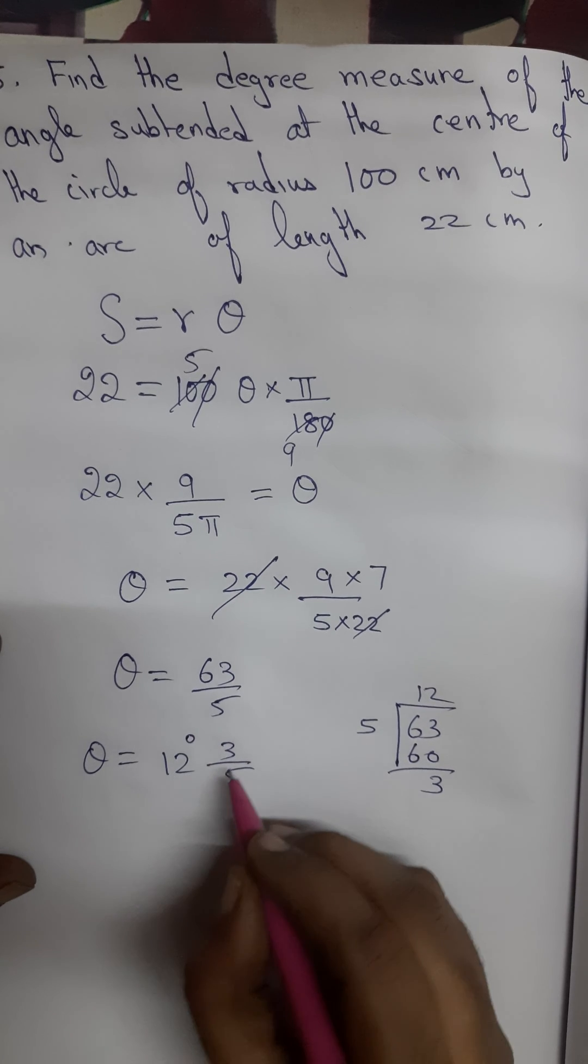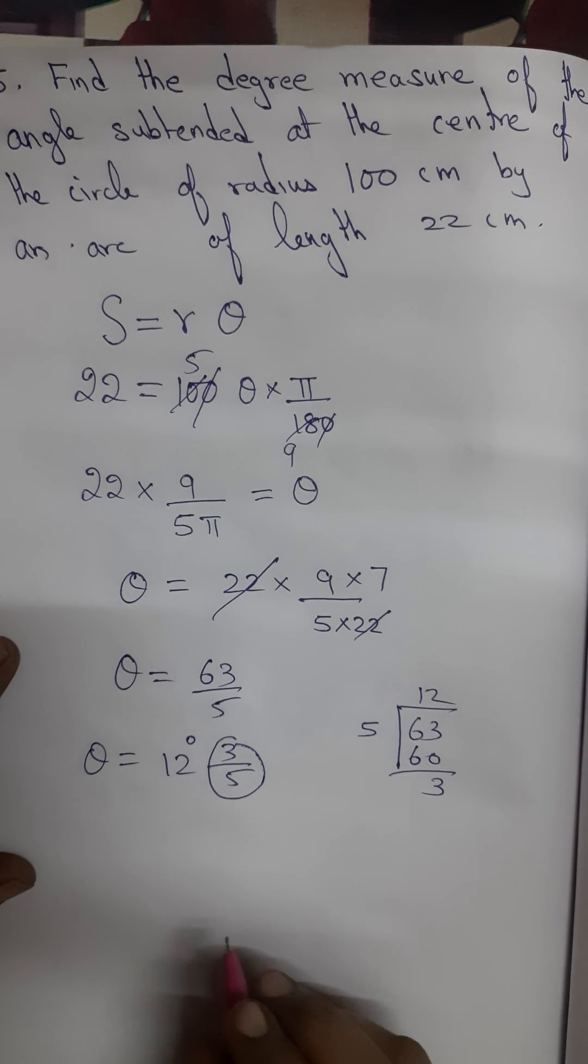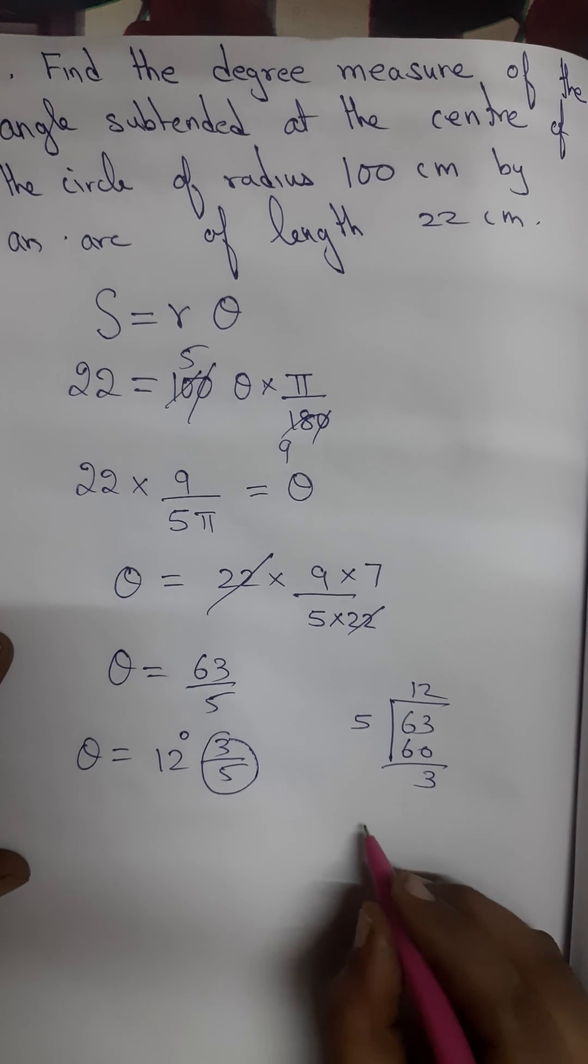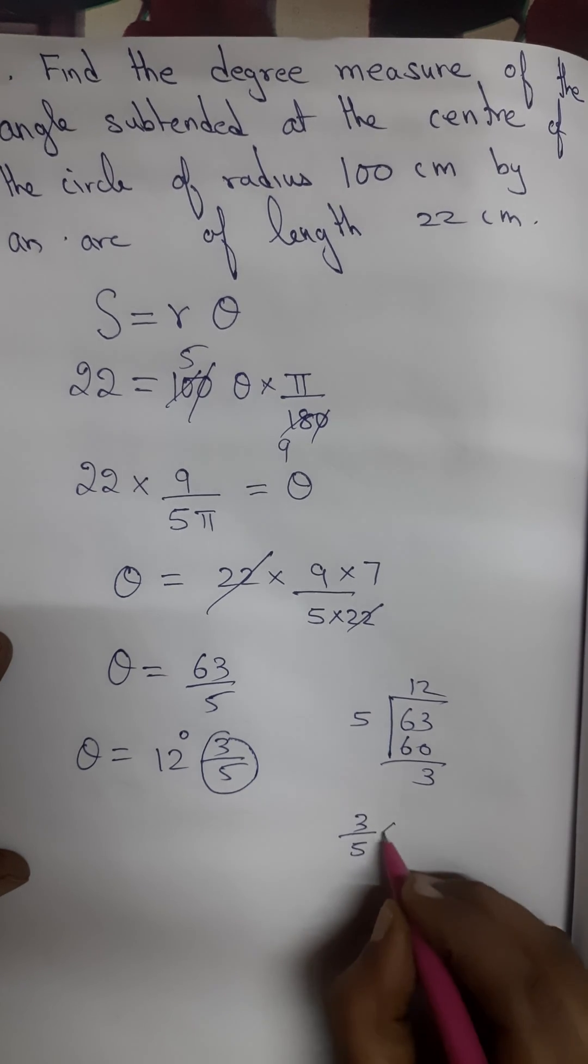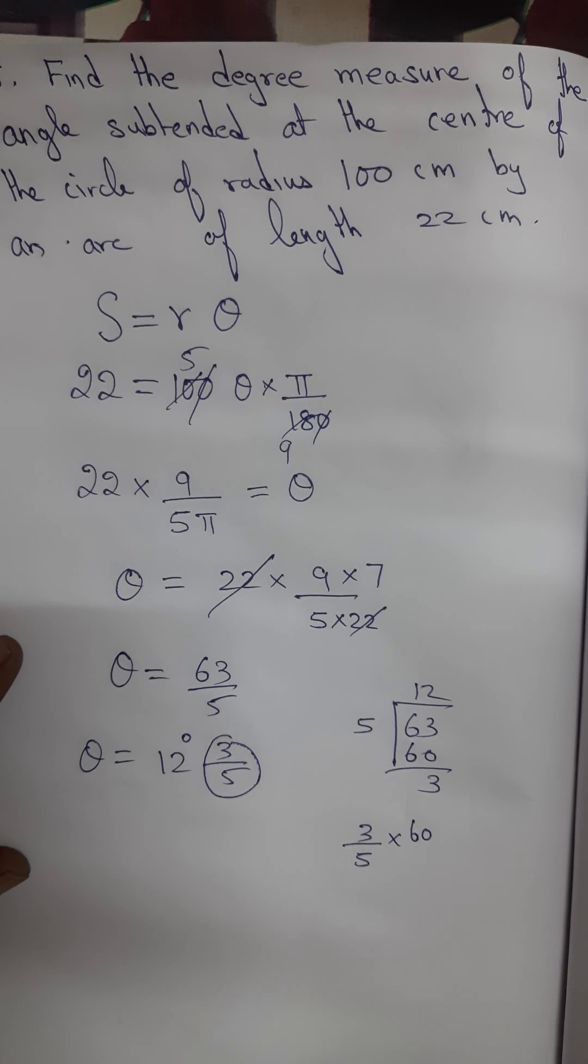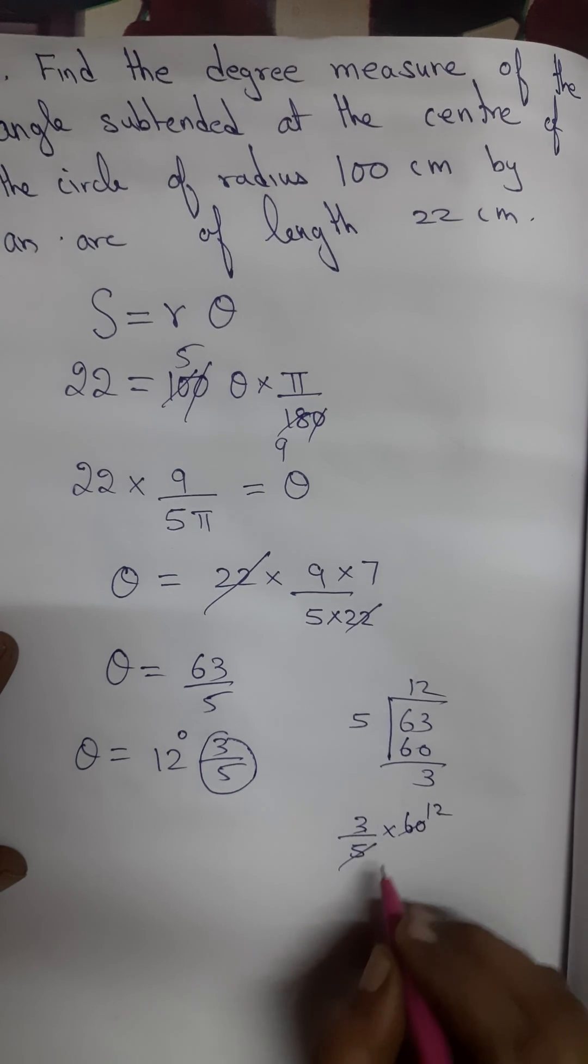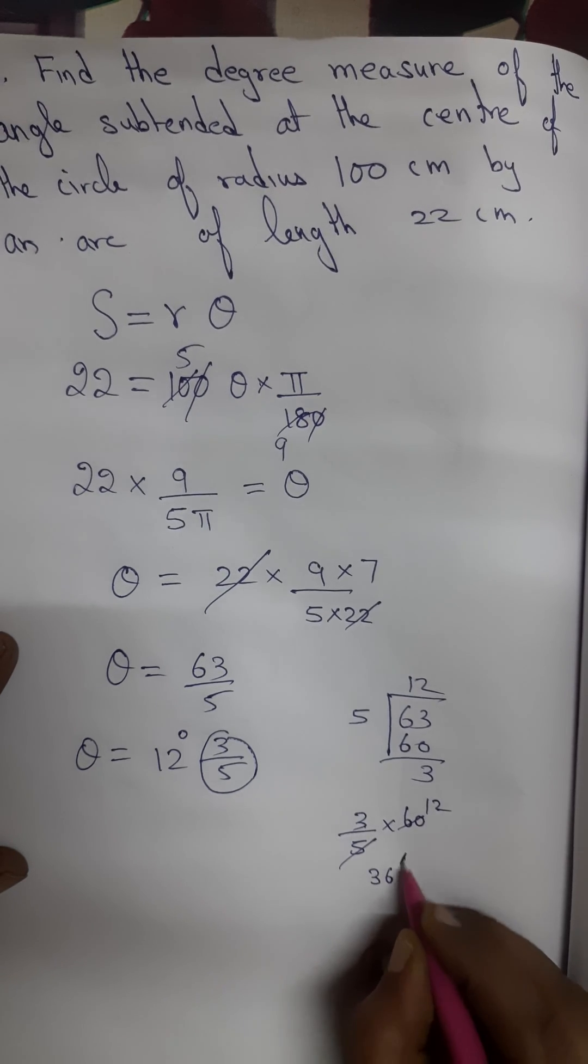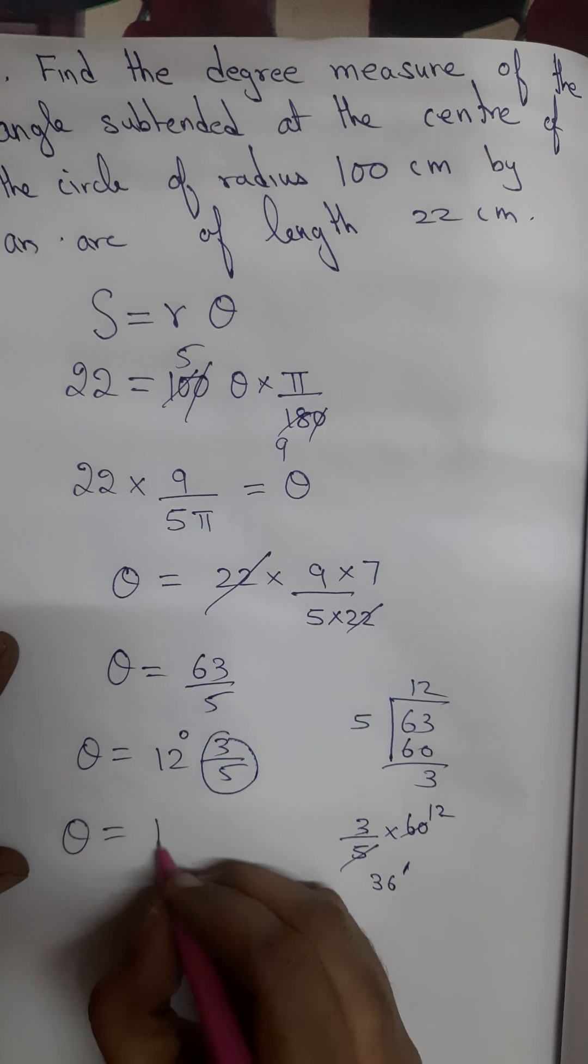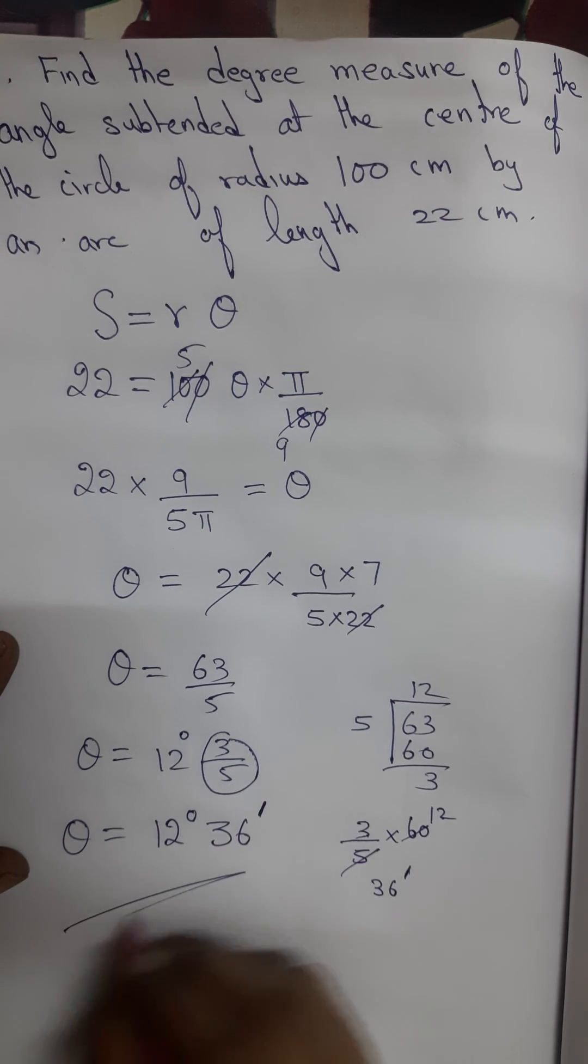This is 12 degree. This fraction I have to convert into minutes. How to convert this into minutes is, this 3 by 5, you have to multiply with 60. Because, you know, 60 minutes makes 1 degree. You will have here 5 12, that is 12 3, 36 minutes. Our angle is 12 degree and 36 minutes. This is our answer.